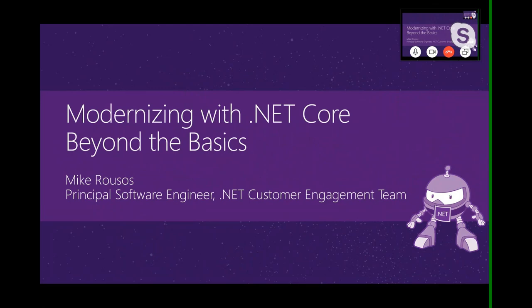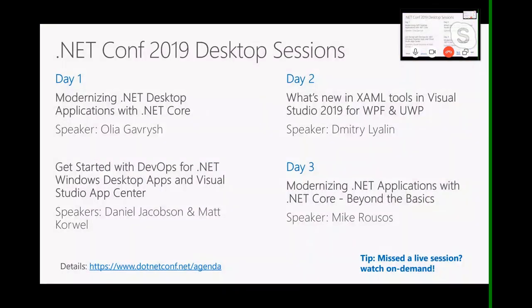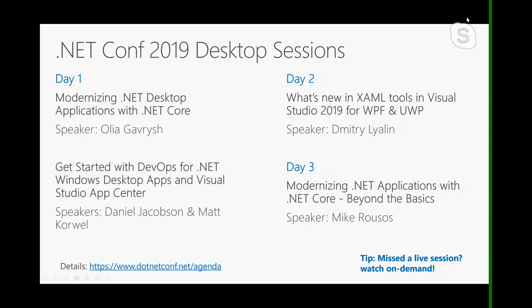This is modernizing with .NET Core beyond the basics. It is the fourth in a series of talks over the past few days, which have looked at how you can take a WPF or WinForms desktop .NET application and bring it over to .NET Core so that it runs in a more modern environment. Olya started us off during the keynote talking about how you can use TryConvert to convert the project file and some basic steps. What I'm going to be talking about today is that next step — after you've done all of these things, what feature areas are different, what things might need changed, and how can you do that?